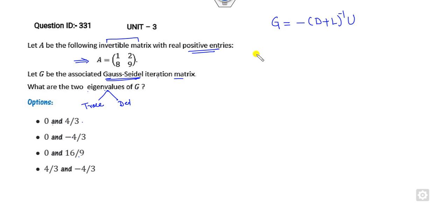Your target is to construct G and find the eigenvalues. D is the diagonal entries, L is the lower matrix. Looking at this matrix, we have D+L and U as the upper matrix. Now find the value of G. The inverse is 9 upon the determinant of 9, giving us the matrix with entries multiplied by U.